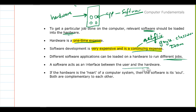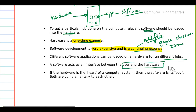Software acts as an interface — a mediator — between the user and the hardware. Hardware cannot do anything without the software. The hardware is like the heart of the computer, and the software can be said to be the soul. You cannot have a heart without a soul, and you cannot have a soul without a heart — both are complementary to each other.